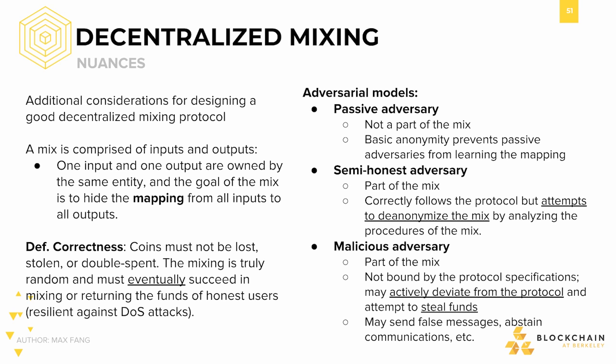To better understand the threats the protocol is up against, let's clearly categorize the possible types of adversarial models we're facing as well. These adversarial models pop up all the time when talking about computer security. The first type is a passive adversary — ideally, basic anonymity will prevent passive adversaries from connecting the inputs to outputs. The second type is a semi-honest adversary. This type of adversary is part of the mix. Though they correctly follow the protocol, they may use information gained during the process to attempt to de-anonymize their peers.